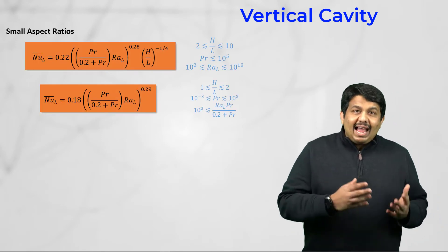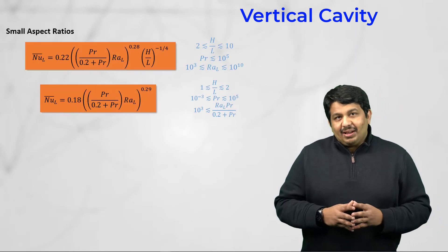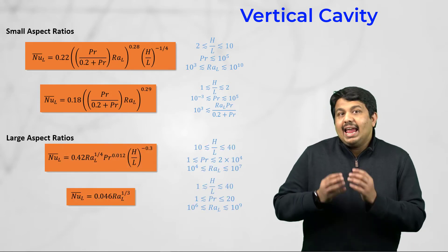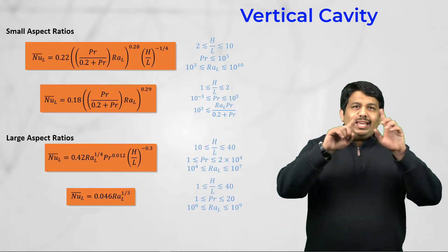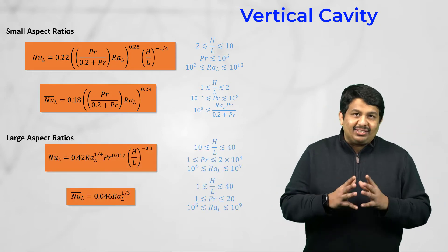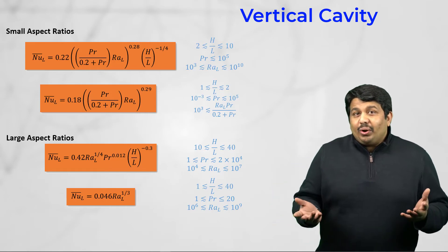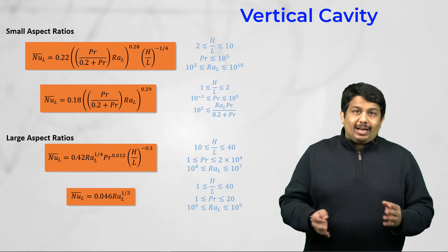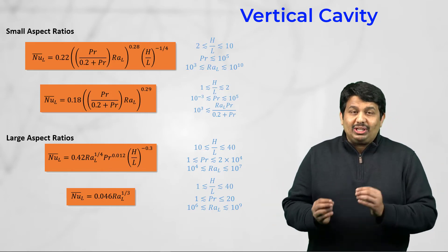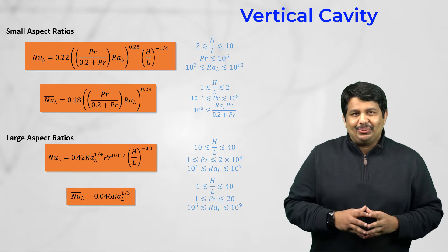As the Rayleigh number increases further, the fluid flow transitions to turbulence. The following average Nusselt number correlations are useful in quantifying the overall natural convection in vertical channels, covering a broad spectrum of enclosure aspect ratios. Let us now switch gears from rectangular enclosures to concentric cylinders.